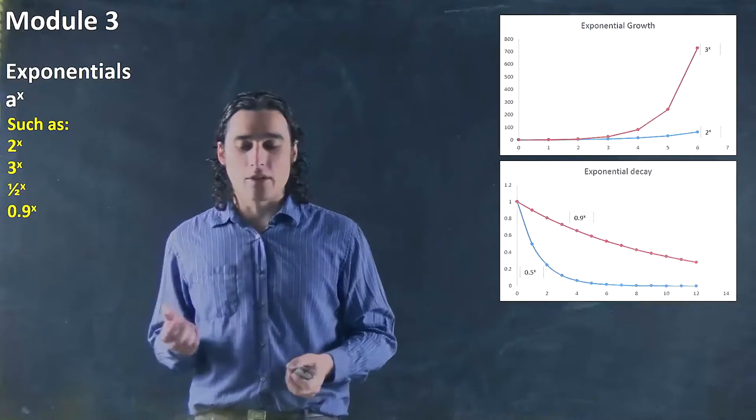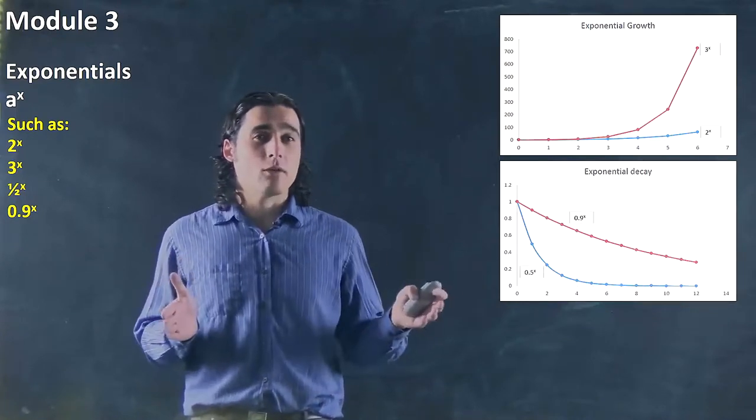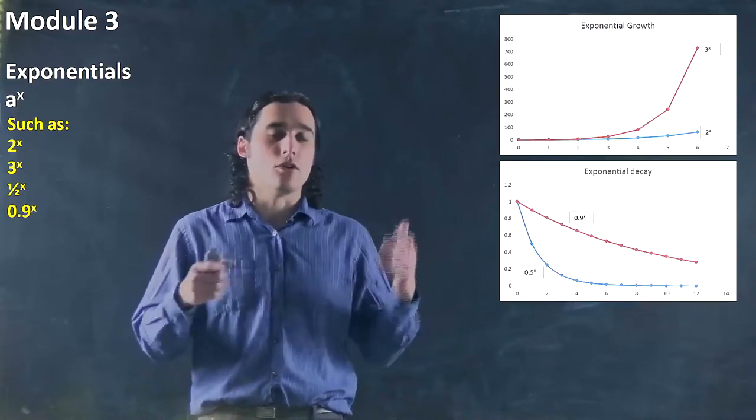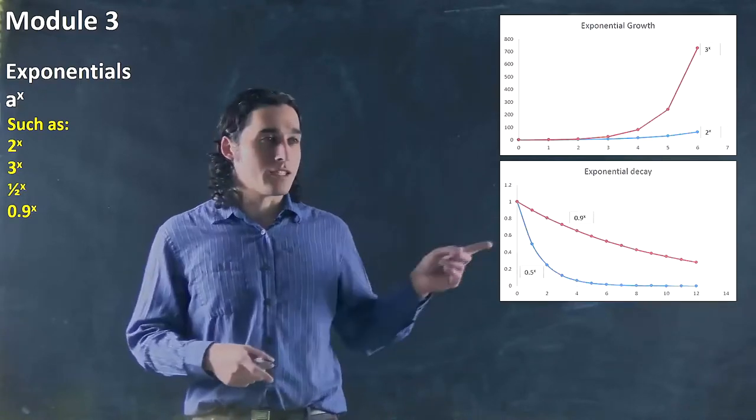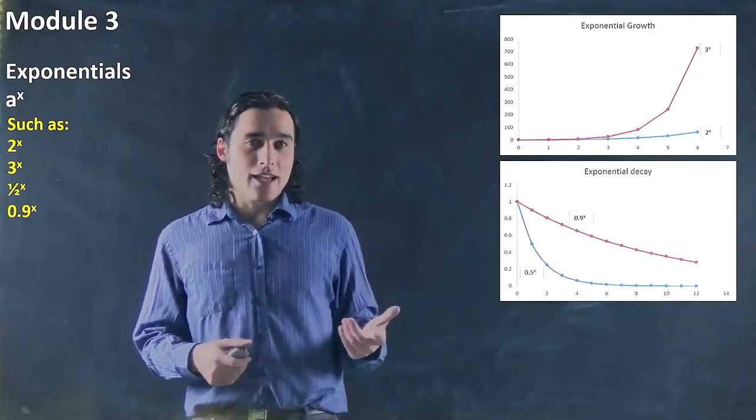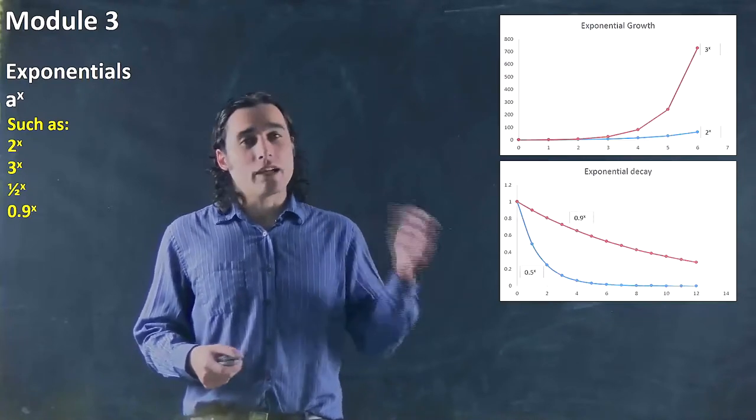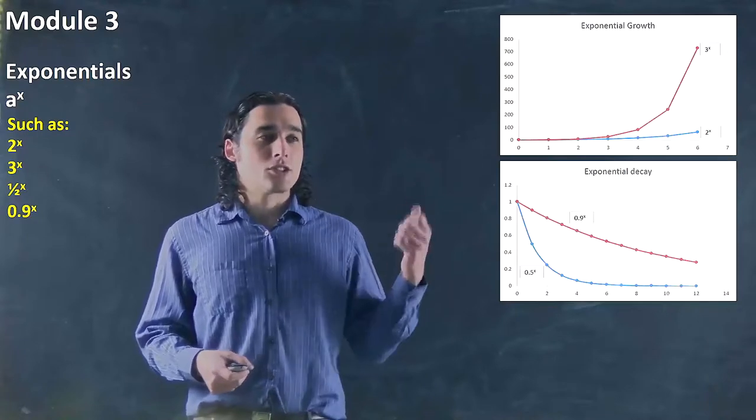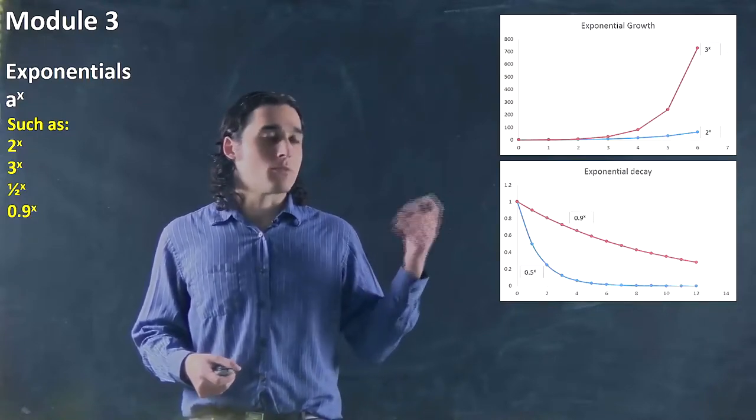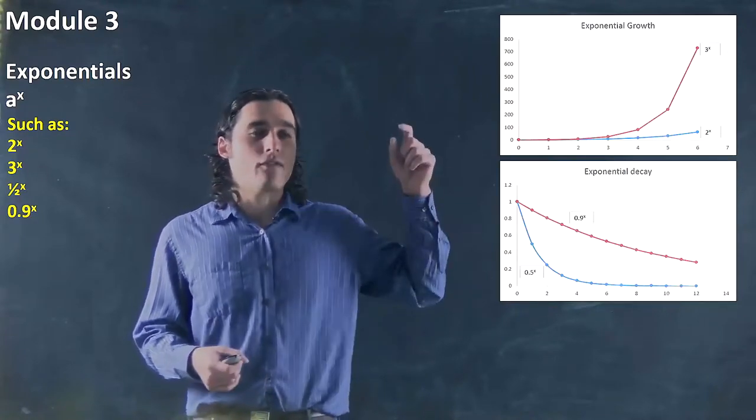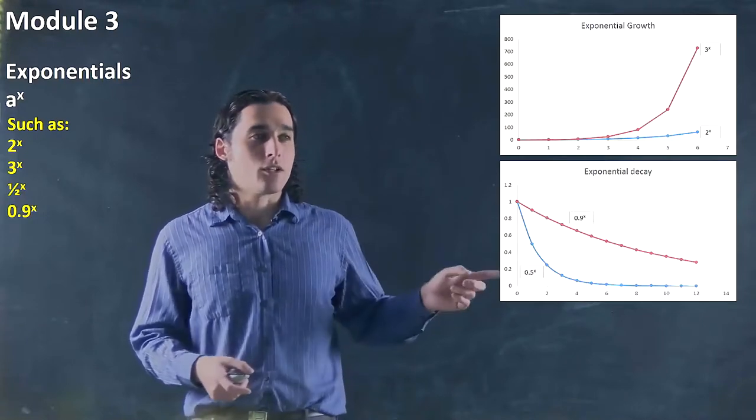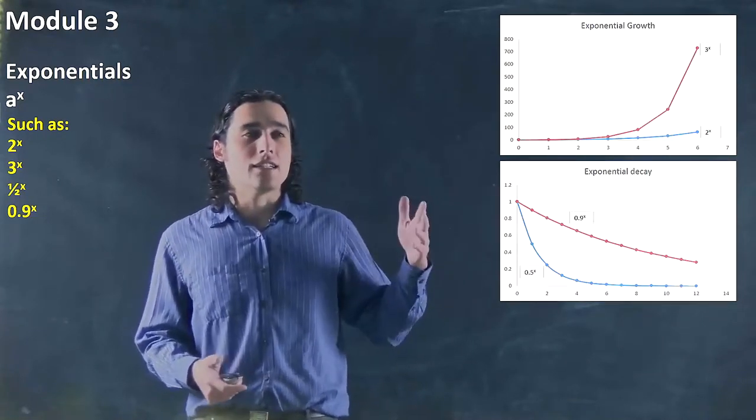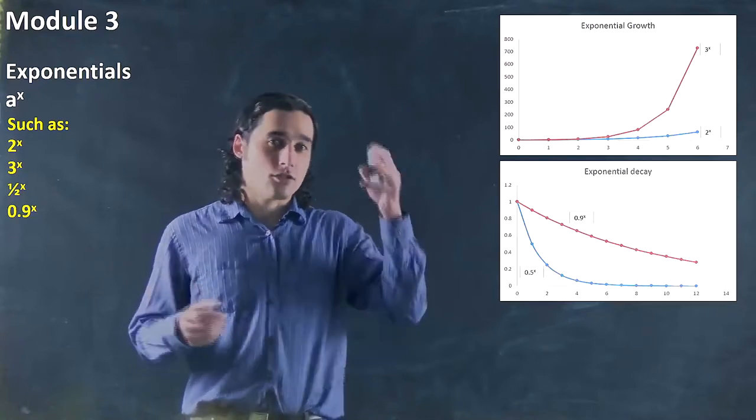But if we get a number that's between 0 and 1, what we actually get is exponential decay. We're getting less of the number over time. And that's what this is showing right here. And in this case, the decay rate, again, will depend on the fraction. But what we find is the smaller the fraction, or the smaller the decimal, the faster it will decay. So that's when you're looking at 0.9^x versus 0.5^x. You can see the 0.5^x is going to drop faster.